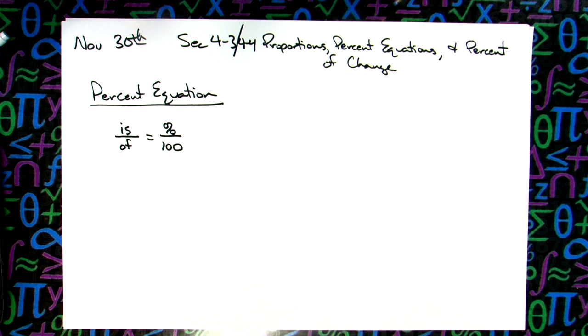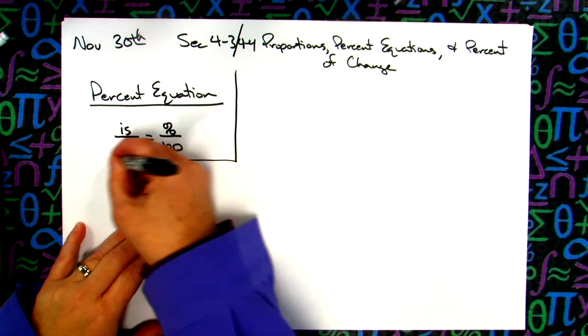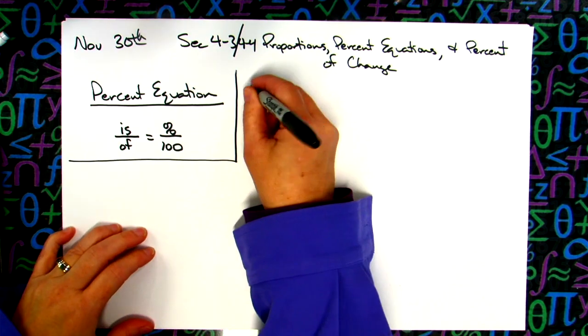We're going to take the questions, find what number is associated with the word is, find what number is associated with of, what the percent is, then plug it in, cross multiply down and solve. We've already practiced how to solve a proportion last week.